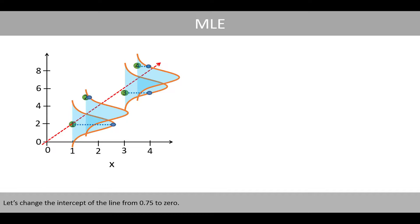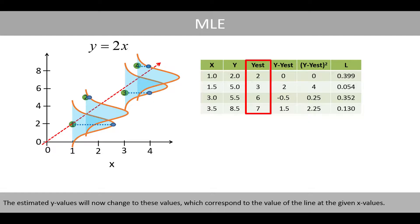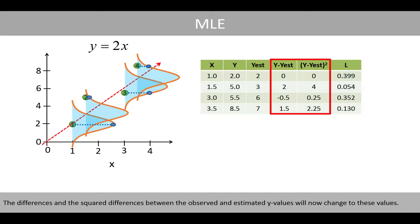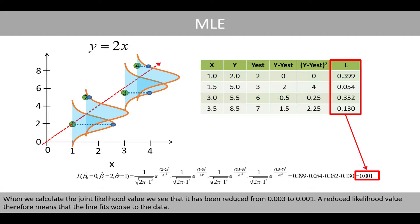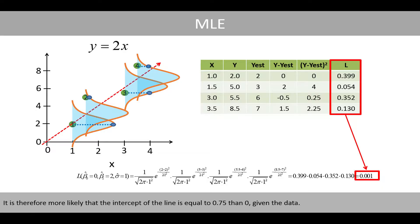Let's change the intercept of the line from 0.75 to 0. The estimated y-values will now change accordingly, corresponding to the value of the line at the given x-values. The differences and squared differences between the observed and estimated y-values will also change. We see that the sum of squared residuals has increased from 4.35 to 6.5, which means that this line fits worse to the data compared to our previous line with an intercept of 0.75. When we calculate the joint likelihood value, we see that it has been reduced from 0.003 to 0.001. A reduced likelihood value therefore means that the line fits worse to the data. It is therefore more likely that the intercept is equal to 0.75 than 0, given the data.